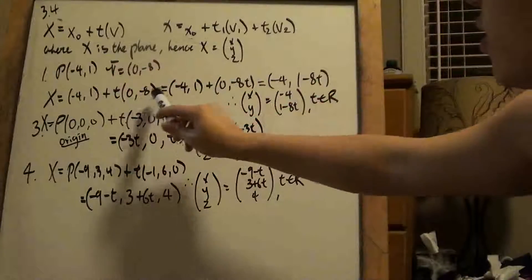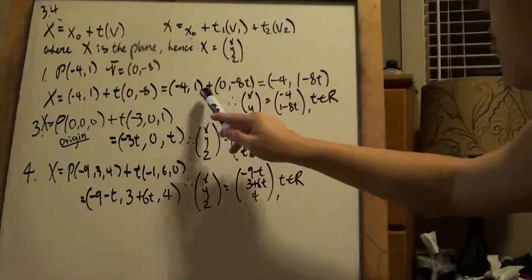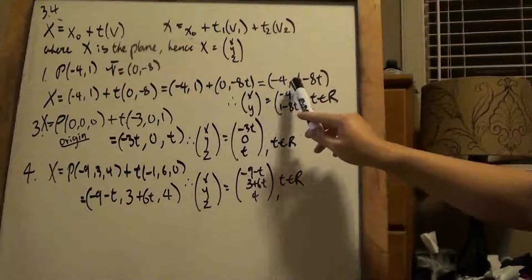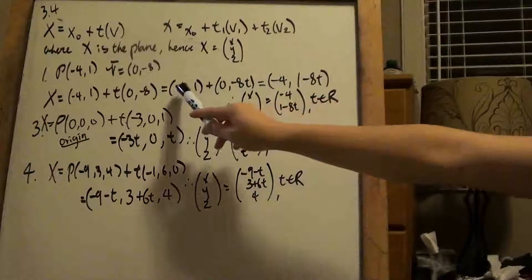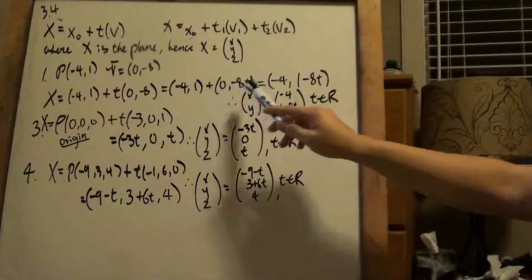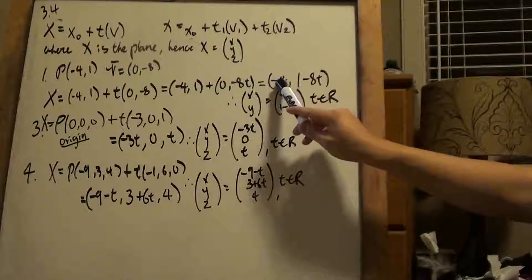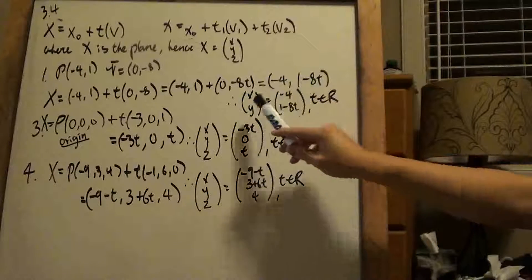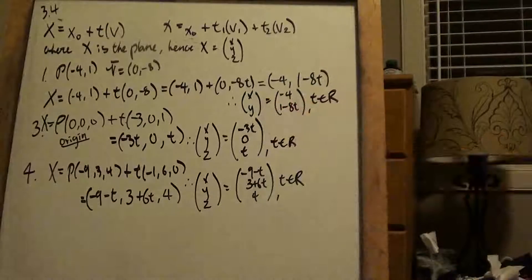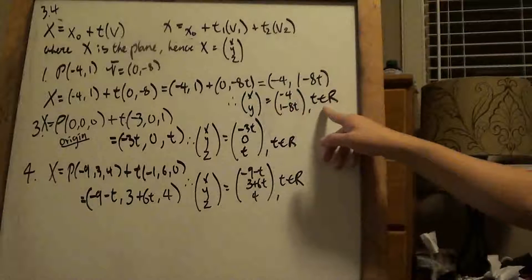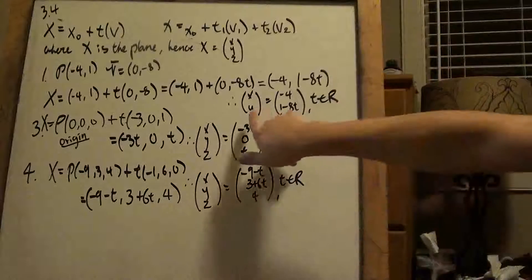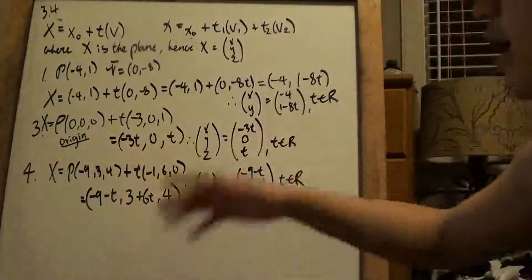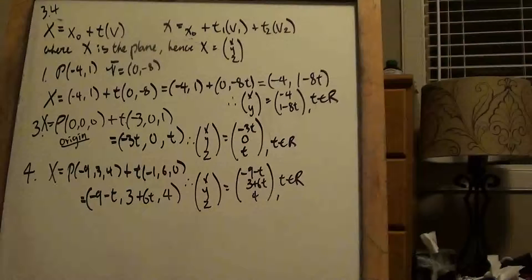You just fill it in — it's not that difficult. Assuming we all know how to do algebra: negative 4, 1 minus 8T — because we're just adding these two vector components. The first one represents X and the second represents Y. The book doesn't say this, but I do it as a habit: T can be any real number. If you look at number 3, it's the same thing but 3-dimensional, because we have X, Y, Z.